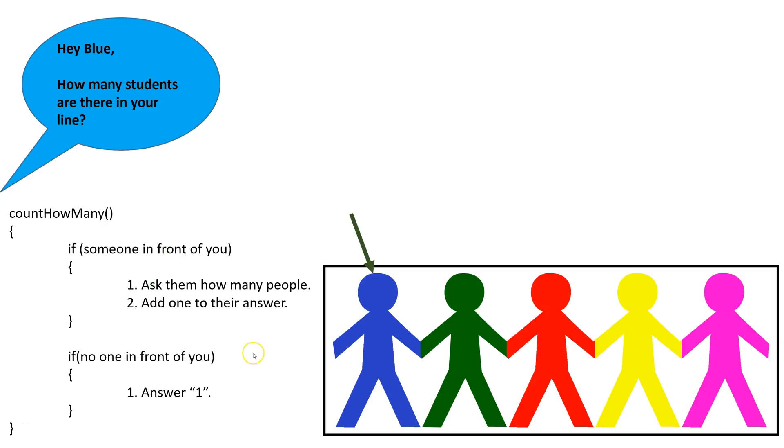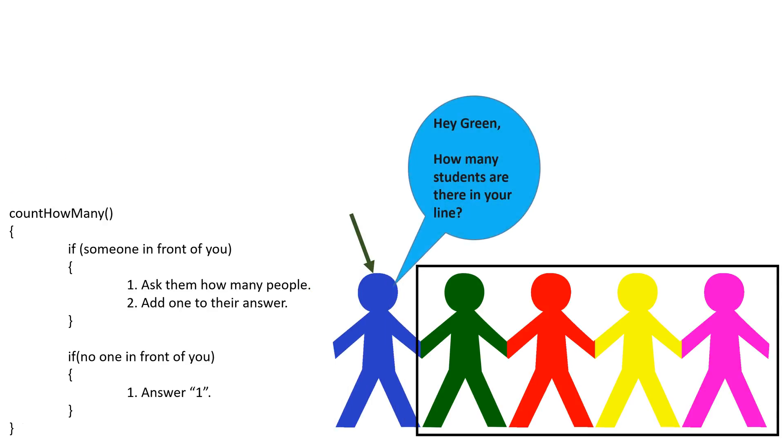Let's try out this algorithm and see how it works. Blue starts by checking, is there someone in front of him? There is, so the first thing he does is ask that person how many people are in their smaller line.